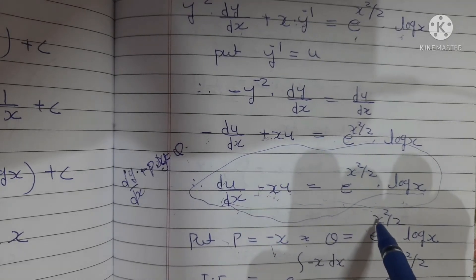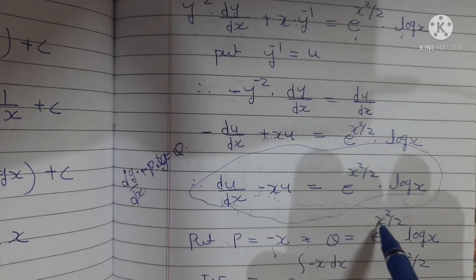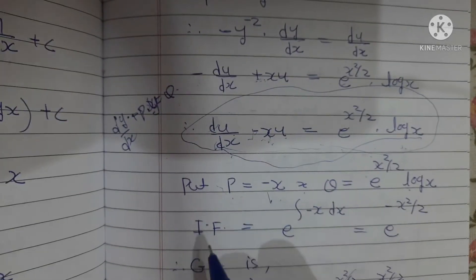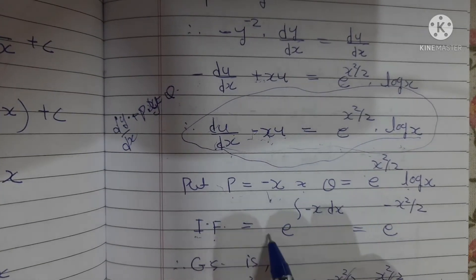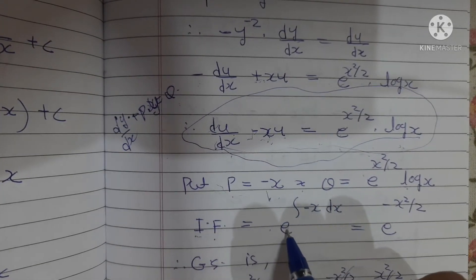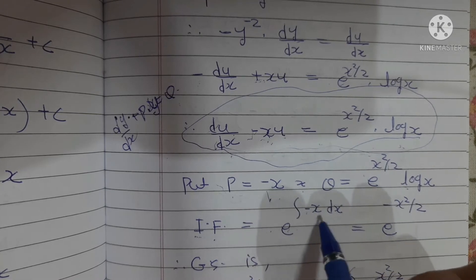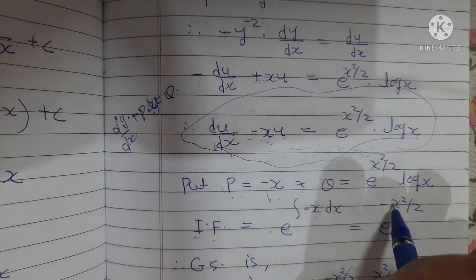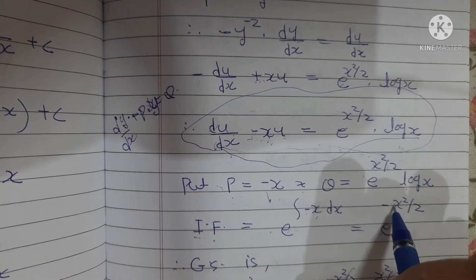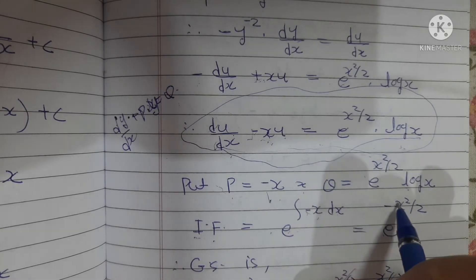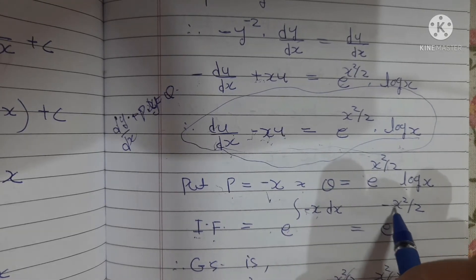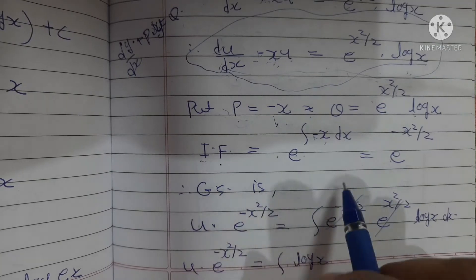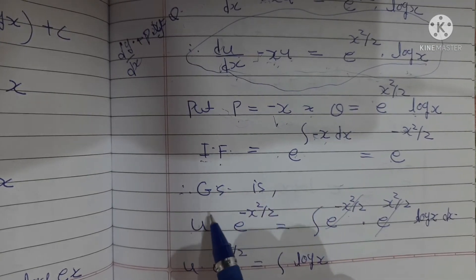Comparing with the standard form, we get P = -x and Q = e^(-x²/2) · log(x). The integrating factor is e^(∫P dx) = e^(∫-x dx) = e^(-x²/2), since the integral of -x is -x²/2.